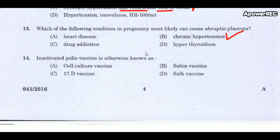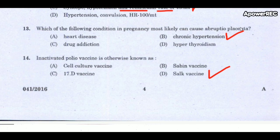Next question: inactivated polio vaccine is otherwise known as Salk vaccine. Salk and Sabin are two doctors who developed separate vaccines for polio. The Salk vaccine was the first polio vaccine, developed in 1955, and consists of a killed vaccine.